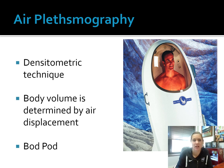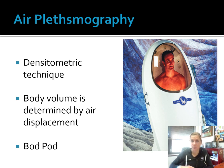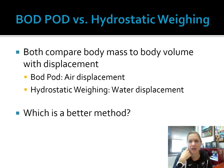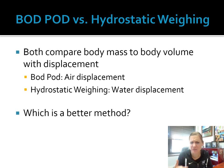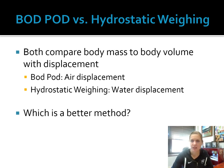Looking at the pros and cons of the bod pod versus hydrostatic weighing: both are pretty accurate. The bod pod is certainly more expensive, but probably easier for both the user and the tester to set up, and we could do multiple people pretty quickly in a row. Both are looking at body mass in comparison to displacement — with the bod pod, we're looking at air displacement; with hydrostatic weighing, we're looking at water displacement. Hydrostatic weighing is probably more affordable for a lab. Hydrostatic weighing is an older method; the bod pod came out maybe around 2008. Both are good methods for getting an accurate body composition.